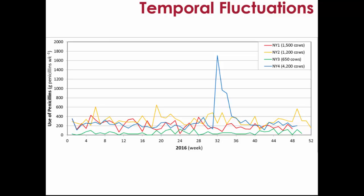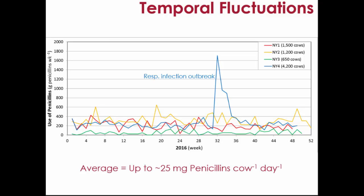We're also trying to track antibiotic usage over time. One farm had a bad respiratory outbreak and their use of penicillins spiked dramatically in just one month. So if we're just sampling manure and we see a high point, we need to track it back to what's happening on the farm. On average, just dividing cows by usage, we see pretty significant amounts of antibiotics being used on some of these farms.